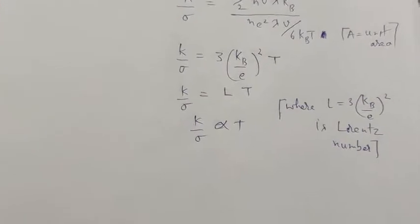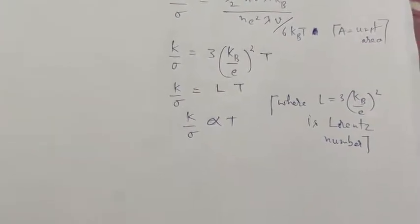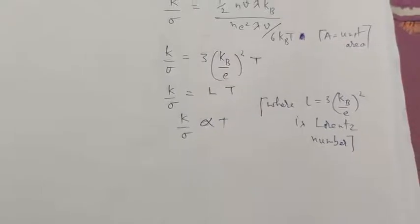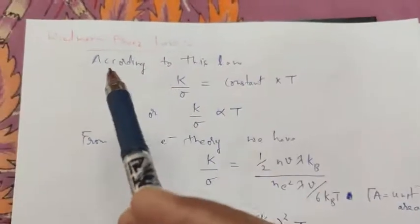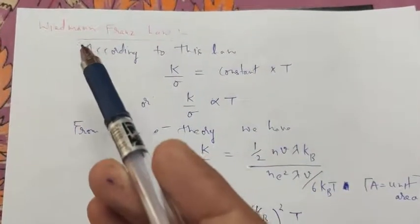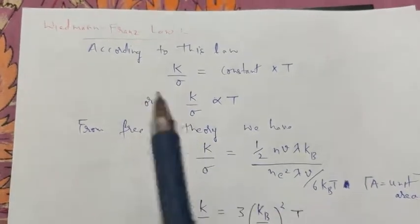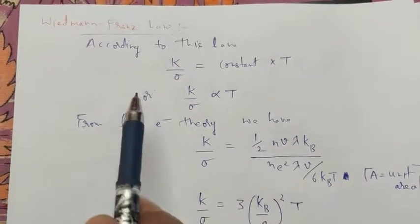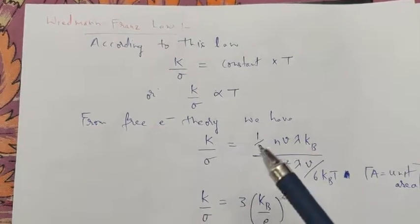The free electron theory of metals has several successes: it successfully explains electrical conductivity, thermal conductivity, Ohm's law, the Wiedemann-Franz law, and the opacity and high luster of metals.